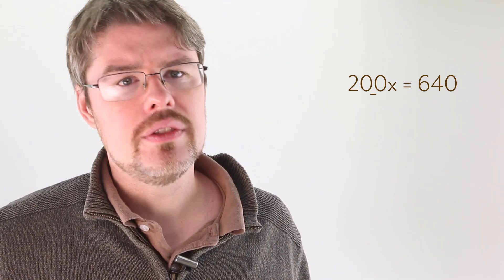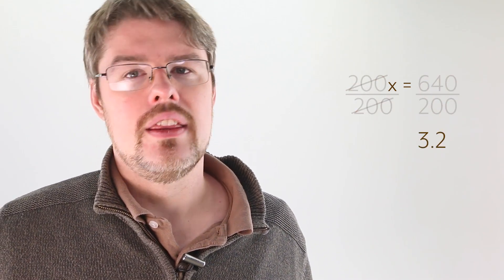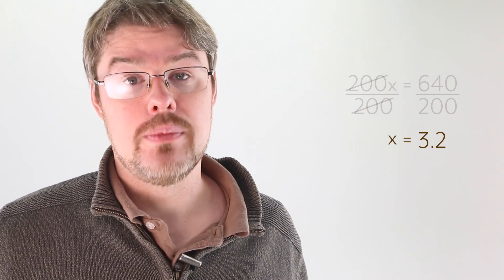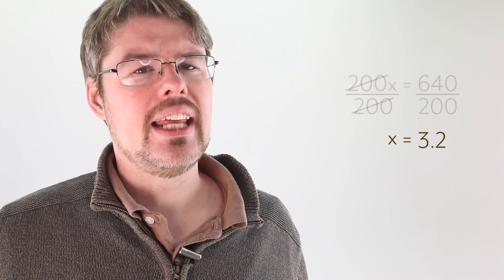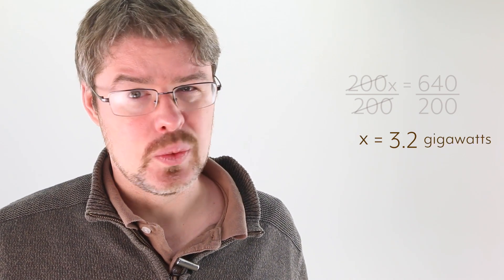Essentially, we will divide both sides by 200, like so, and then convert the fraction into a decimal. This leaves us with x equals 3.2. Now, this doesn't make any sense. I need to have 3.2 gigs? What?